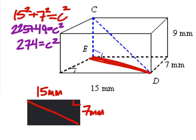All right, so we have 274 equals C squared. Let's square root both of this, so that we just have the hypotenuse, and the square root of these is the square root of 274.